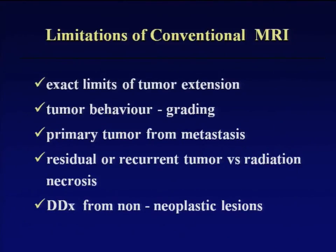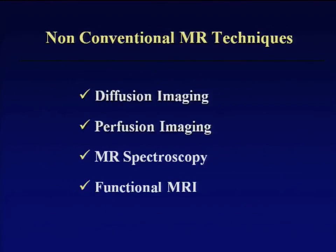However, conventional MRI has many limitations. It is very difficult using CT and conventional MRI to delineate the true limits of the tumor, to evaluate tumor behavior and grading, to differentiate primary tumor from metastatic disease, to differentiate residual tumor versus radiation necrosis, and to differentiate other non-neoplastic lesions. So we use the weapons of diffusion, perfusion, and spectroscopy mainly to help in these situations.